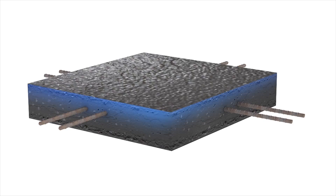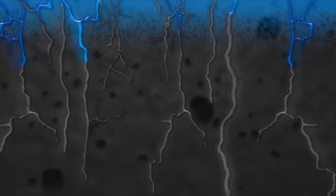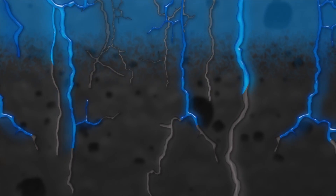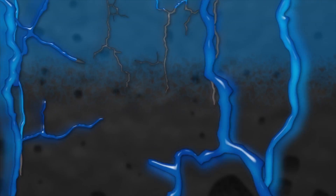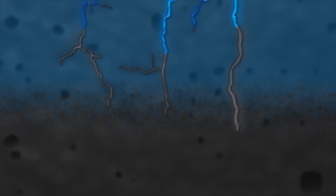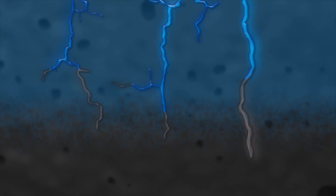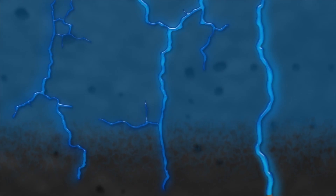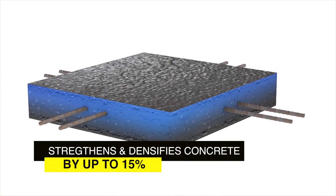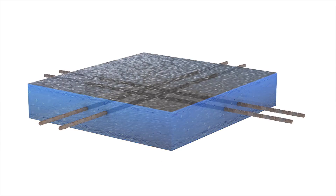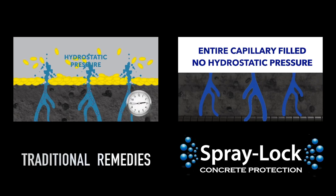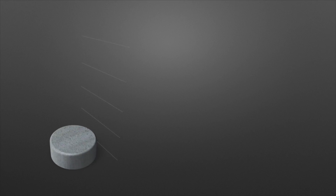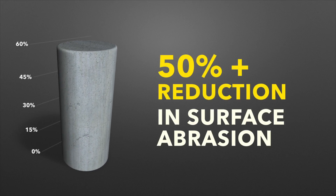Shield-Crete is also uniquely able to strengthen and densify the concrete, as it accelerates the calcium silicate hydrate reaction that takes place within the capillary spaces in the concrete. It changes the normal calcium silicate hydrate reaction gel into a stronger compound within the pore spaces. Adding Shield-Crete into the concrete capillaries can strengthen and densify concrete by up to 15%. By filling, rather than just blocking the capillaries, it also hardens the surface paste, making it resistant to abrasion. Independent tests show a reduction in surface abrasion of concrete surfaces by over 50%.